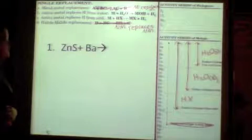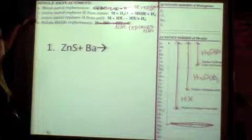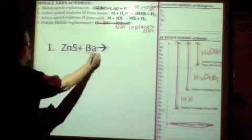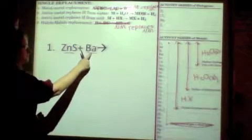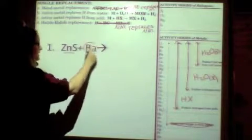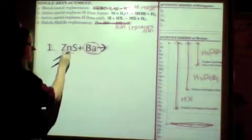So example. ZnS plus Ba. So the first thing you're going to do is look at your guidelines, A, B, C, or D. So you look at your single element and your compound. Does your compound contain hydrogen in it? No. So that means it's not B or C. That means it's either A or D. So then you look at your single element. Is your single element a metal or a non-metal? It's a metal, so that means Ba is going to replace the metal in the compound, which is Zn.